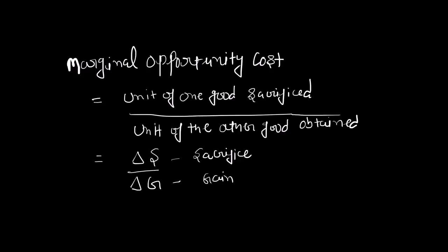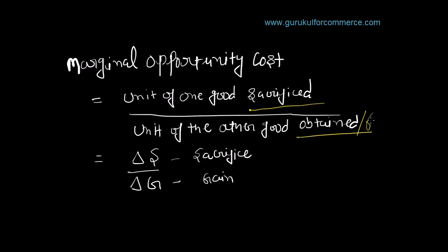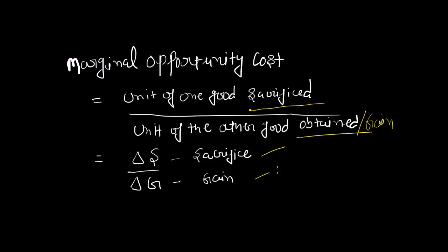This video lecture will teach you how to calculate marginal opportunity cost. The formula is pretty simple: it is the unit of one good sacrificed divided by the unit of the other good obtained. In some books you would also find the word 'obtained' written as 'gained.' This is also referred to as ΔS/ΔG, where S stands for sacrifice and G stands for gain.